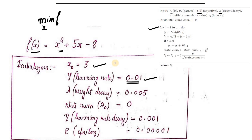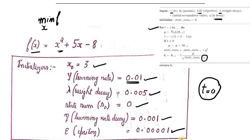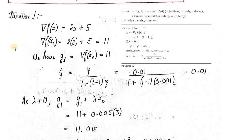Apart from that, we initialize the state sum to 0. With all initializers set, at time t=0 we have x_0 = 3, and we will proceed to see what happens at t=1. Following the algorithm at time step 1, we calculate the gradient of f(x) which comes out to be 2x + 5. We calculate the gradient value at t=0, which gives us g1 as the gradient of f at time t-1.